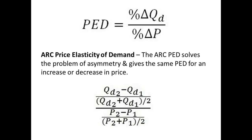In the ARC Price Elasticity of Demand formula, we first divide the changes in demand by the average of quantity demanded 1 and quantity demanded 2. We did the same thing for the percentage change in price. The reason why we do this is because the percentage change is different when a value moves up than it is when a value moves down.